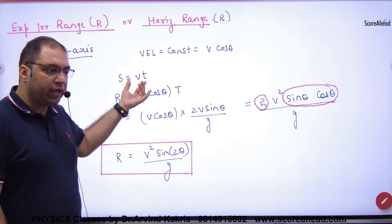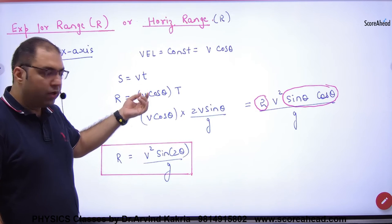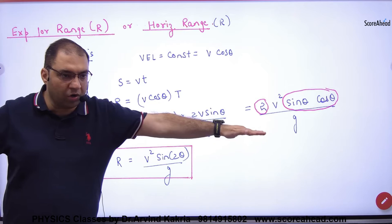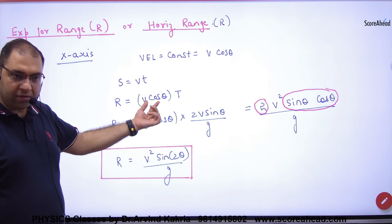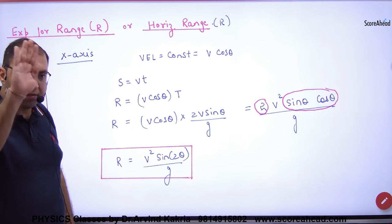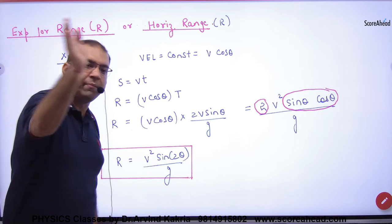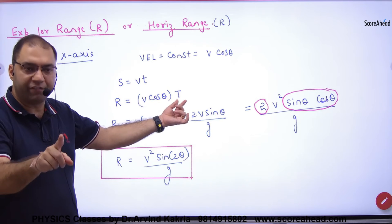The equation s is equal to vt. So on the left is R because the whole horizontal distance is R. Velocity vcos theta because the horizontal velocity remains constant, and total how much? Time of flight. R distance covered, time of flight.